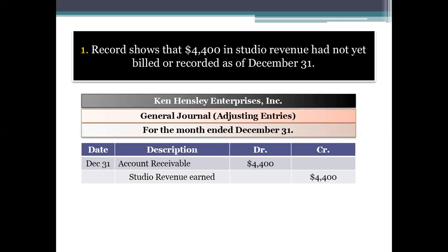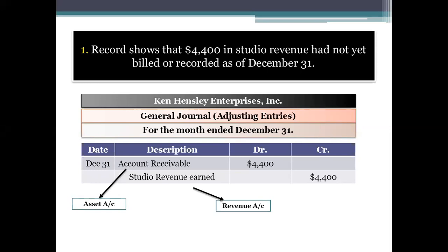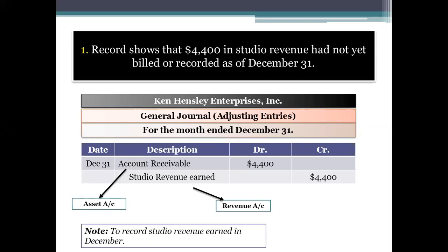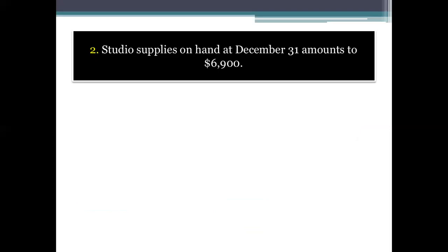The journal entry is: Account Receivable debit $4,400 and Studio Revenue Earned credit $4,400. Account Receivable belongs to the assets account and Studio Revenue belongs to the revenue account. We have recorded the studio revenue that was earned in December 2009.